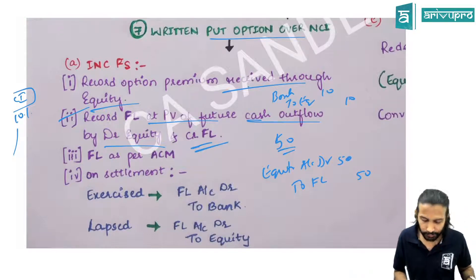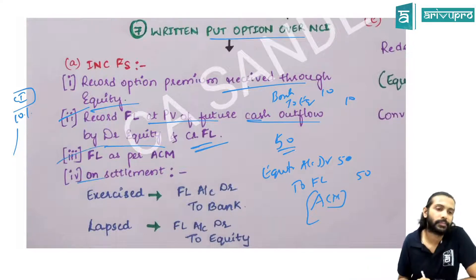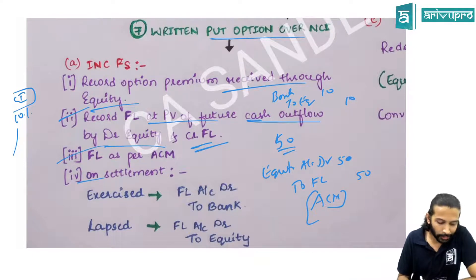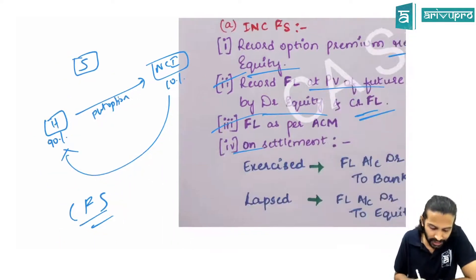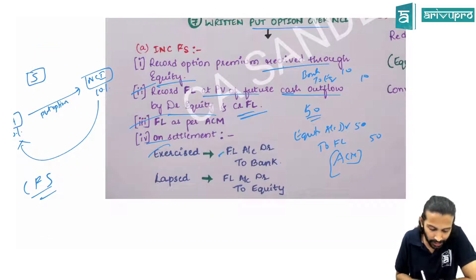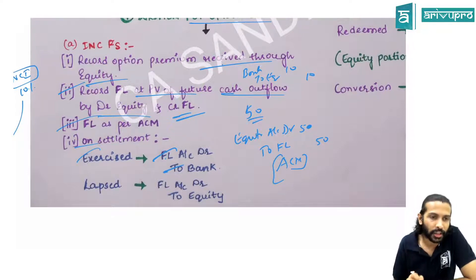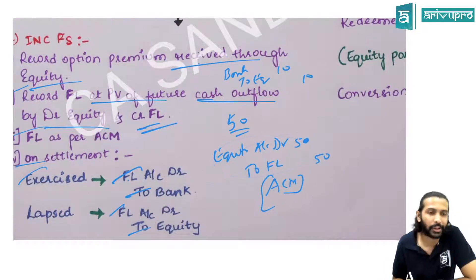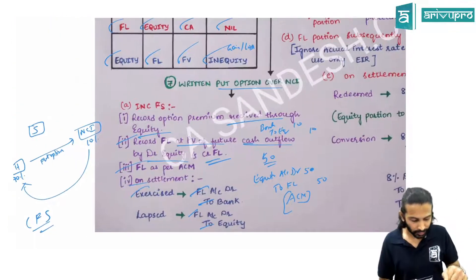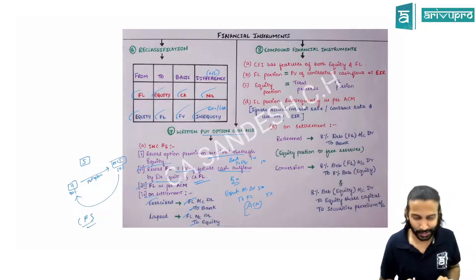The financial liability for the written put option is accounted under the ACM method. On the settlement date, if NCI exercises the option, the holding company pays: financial liability debit to bank. If NCI doesn't exercise, the obligation is over and the entry is reversed: financial liability debit to equity account.